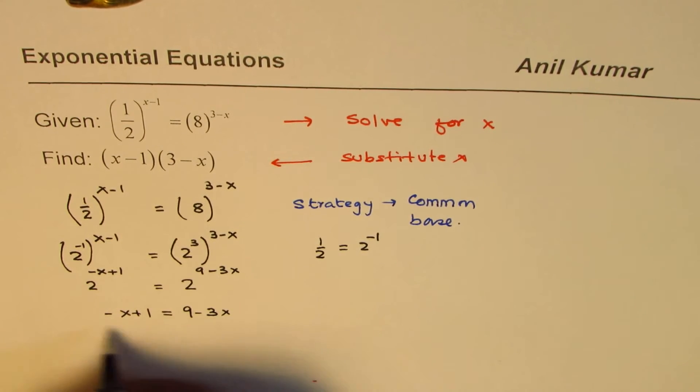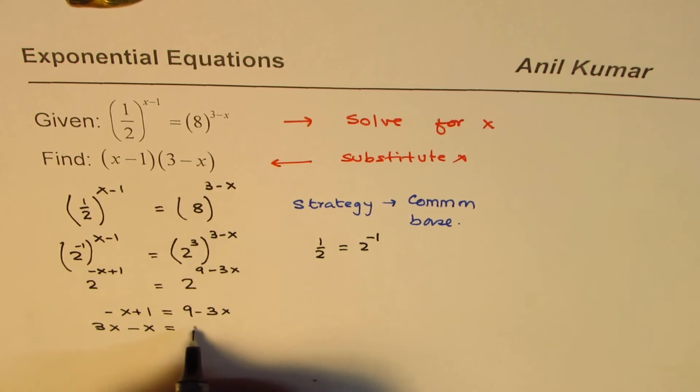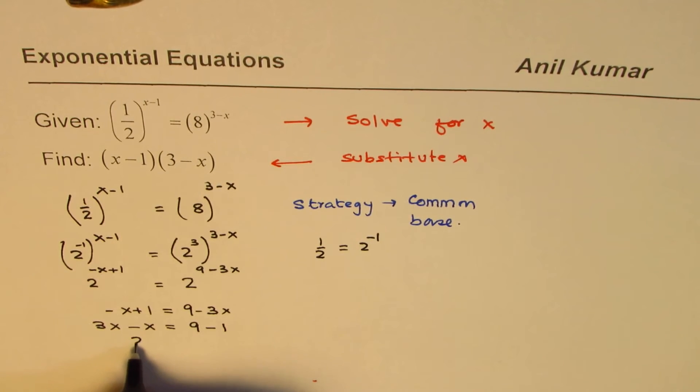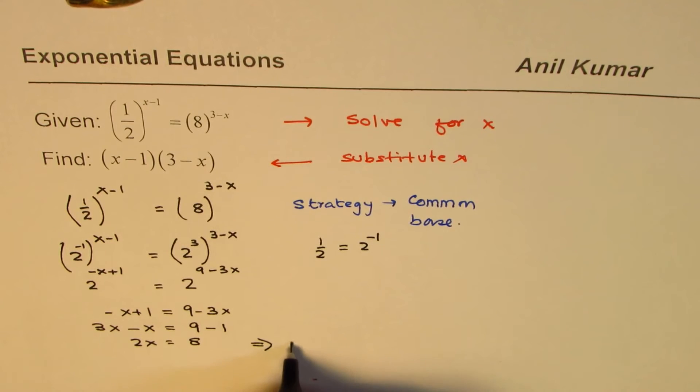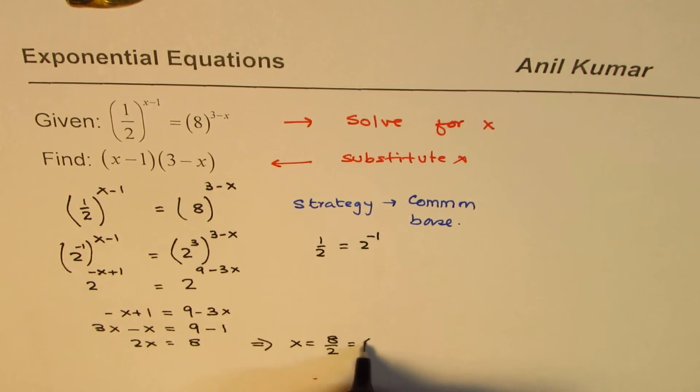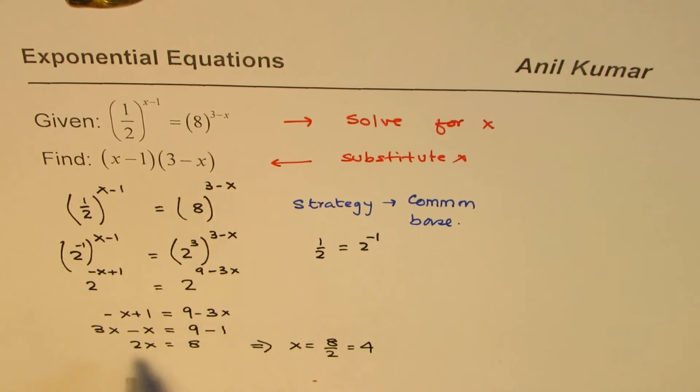We can now solve for x. We get 3x-x = 9, bringing 1 to that side, 9-1. 3x-x is 2x which is equal to 8, and that gives us x is equal to 8/2, and that is 4. Is that okay? So we get the value of x as 4.